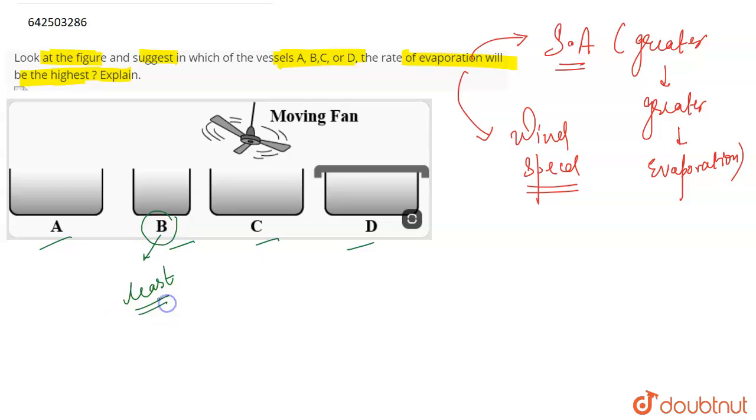Talking about A, C, and D, they appear to be the same in terms of surface area. But if we talk about C, C has a fan. This fan is providing wind speed.